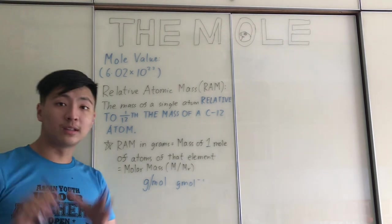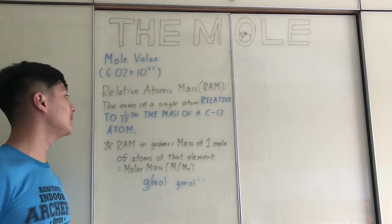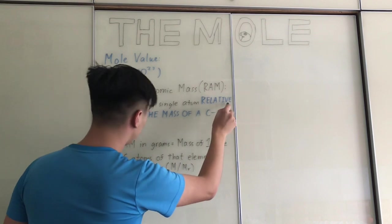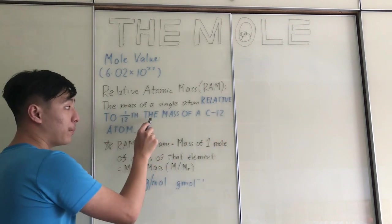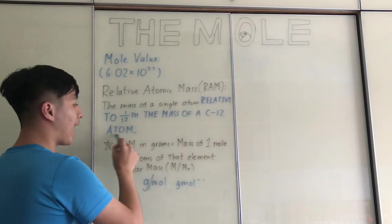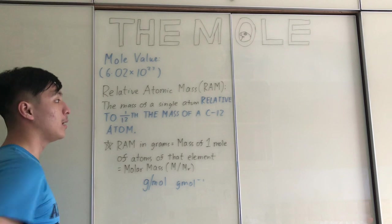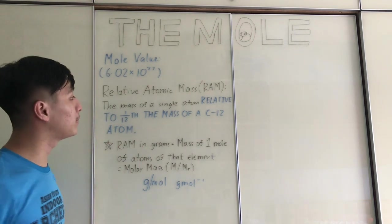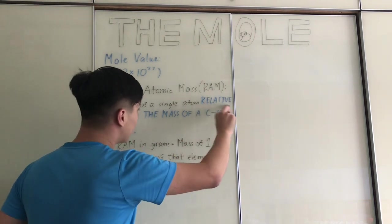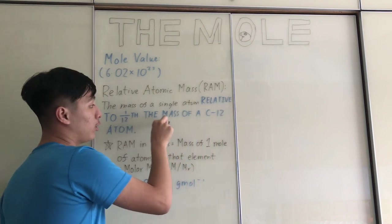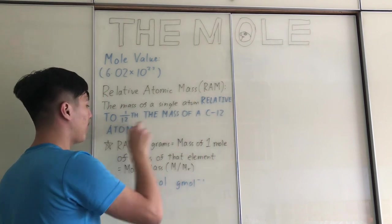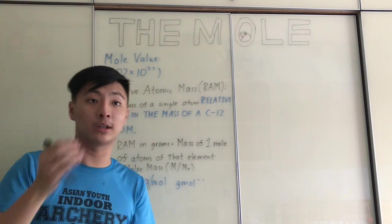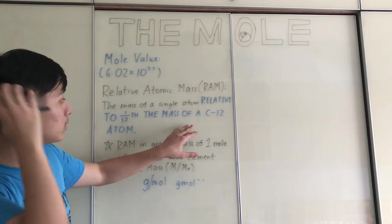The definition of relative atomic mass is the mass of a single atom relative to one twelfth the mass of a carbon-12 atom. The area where most students lose marks is because they forget to mention 'relative to one twelfth the mass of a carbon-12 atom.' Make sure you highlight that part clearly so you don't lose marks.